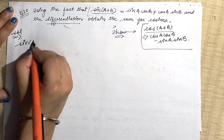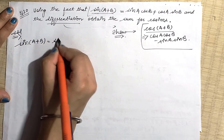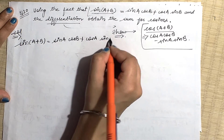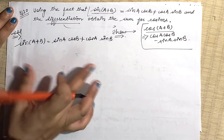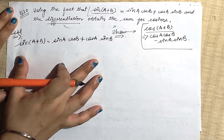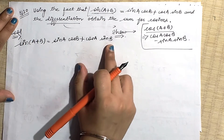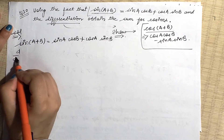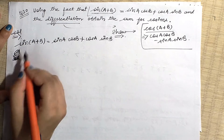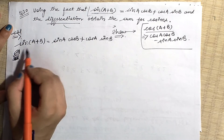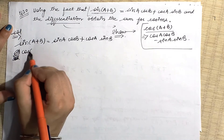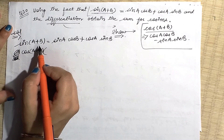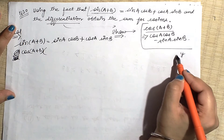So here we have: sin(a+b) = sinA cosB + cosA sinB. Now we need to differentiate this with respect to x. As soon as I differentiate the whole equation, let's see what values we get. Starting with the left hand side: d/dx of sin(a+b). The differentiation of sine gives cosine, and whatever angle is inside comes as it is. With the help of the chain rule, a+b also gets differentiated.